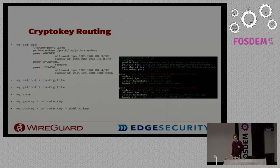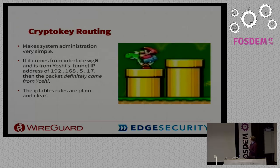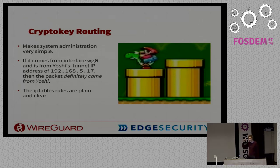To the system administrator, the whole interface appears stateless — you just set it up, here are the peers, and then it works. Because we have the relation between public keys and IP addresses, if a packet comes from the wg0 interface with a particular source IP, it must be from that peer through the tunnel — it must be because it's from their public key. With iptables, you simply match on the input device wg0 and the source address, and that's all you need.